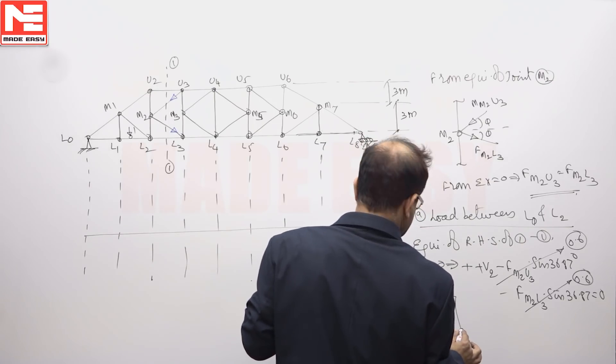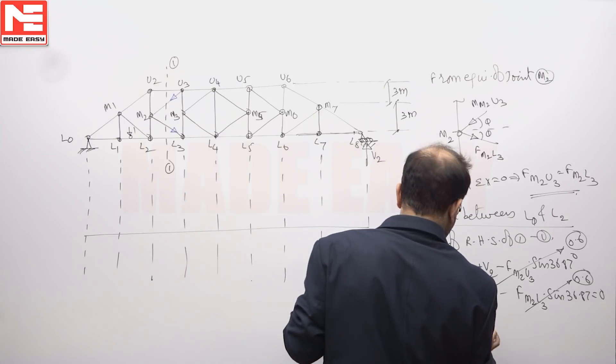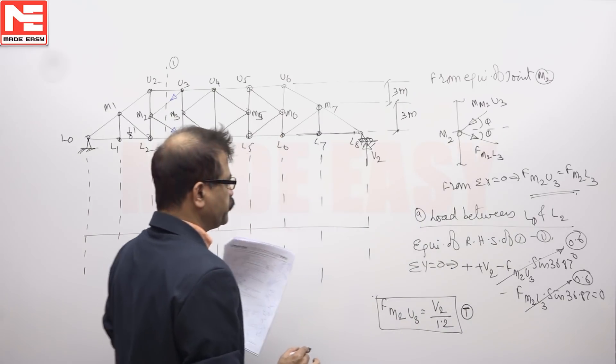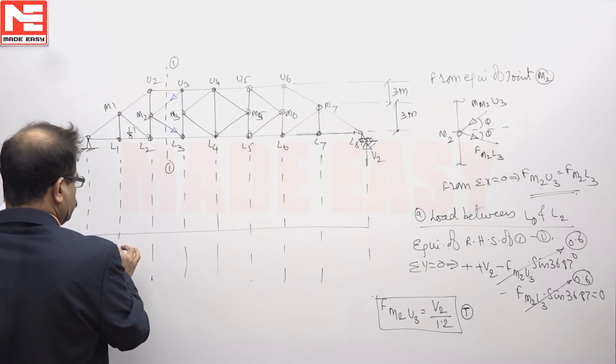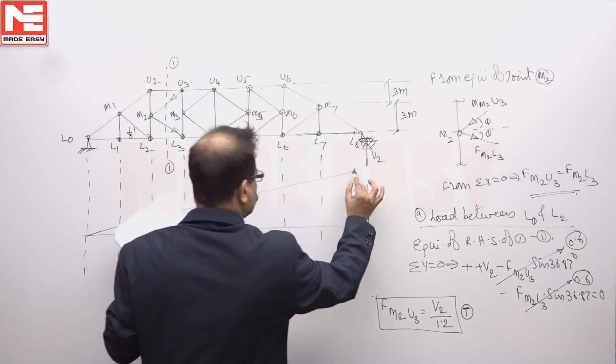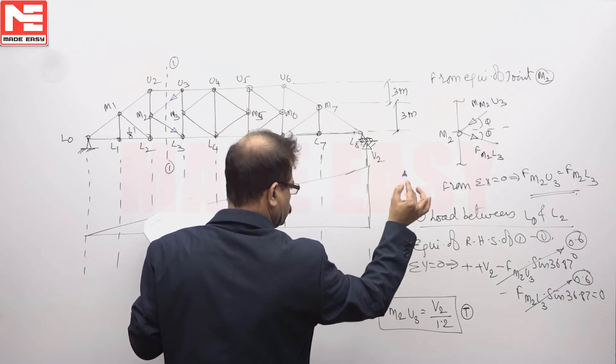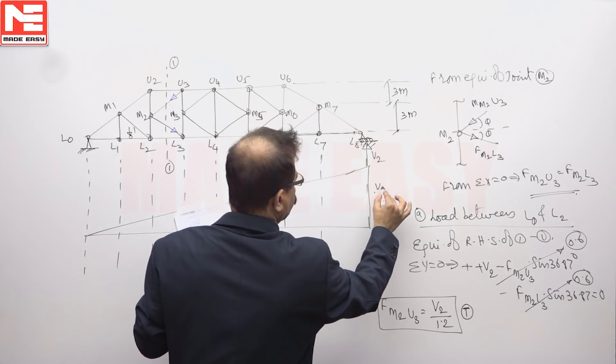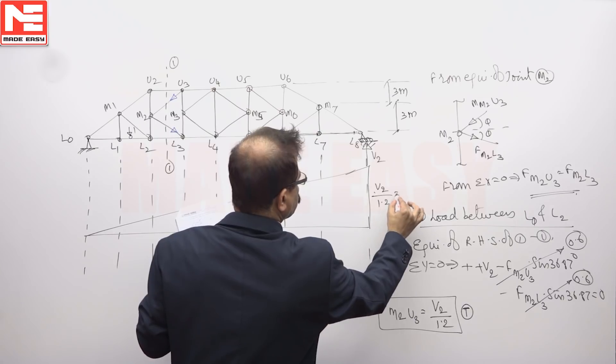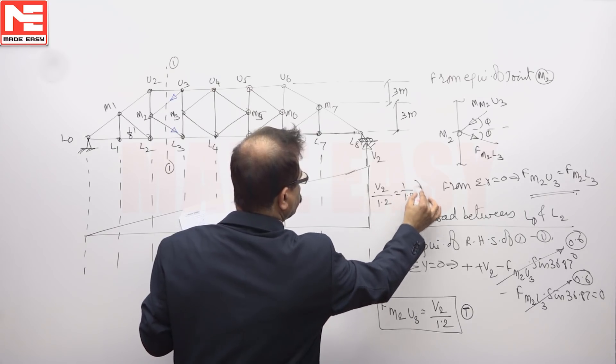You will get tensile force. FM2 U3 equals V2 by 1.2, which is nothing but 1 by 1.2.